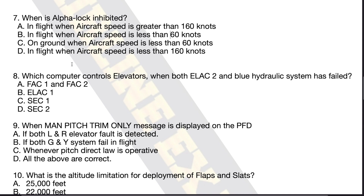The question which recently came up in the R&D examination was: when is alpha lock inhibited? There are 4 options. Option A: in flight when the aircraft speed is greater than 160 knots. Option B: in flight when the aircraft speed is less than 60 knots. Option C: on ground when the aircraft speed is less than 60 knots. Option D: in flight when the aircraft speed is less than 160 knots.